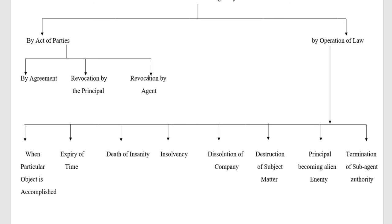The same applies to revocation by the agent. The legal framework also provides that an agent can revoke the contract of agency. What he has to do is give notice to the principal or submit a resignation to the principal within a reasonable period — before the actual date of termination. If he does not act within the reasonable period, then the principal can reserve the right to demand compensation for the loss accrued to him by the act of his agent.